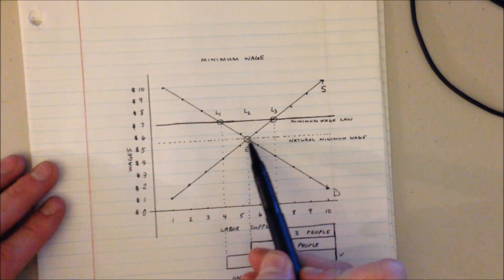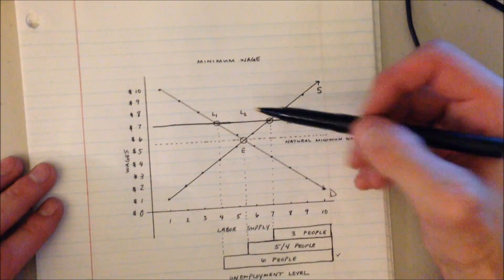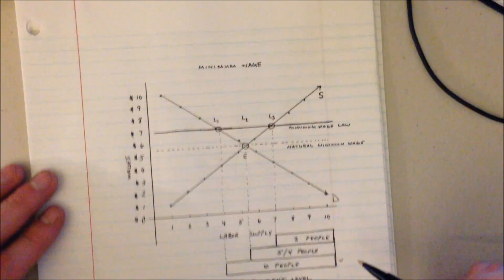And when you compare that to our original natural minimum wage we see that we've actually increased our unemployment by increasing our minimum wage.